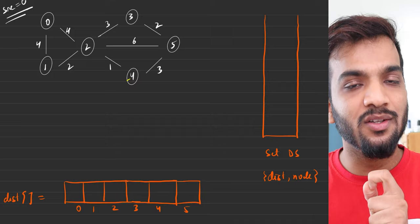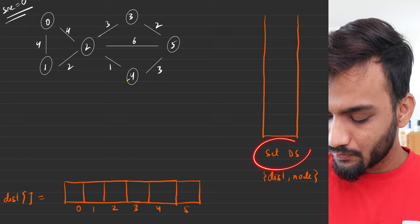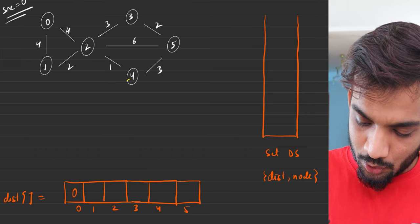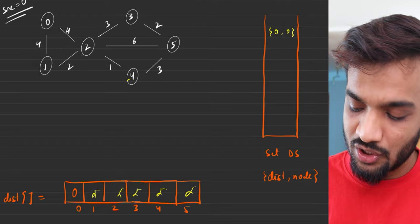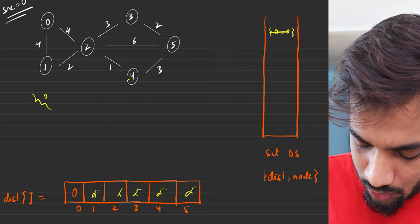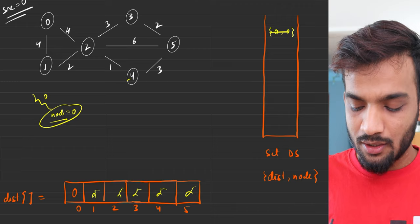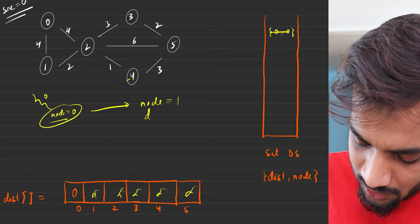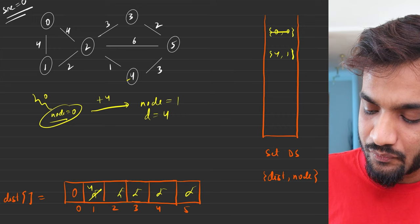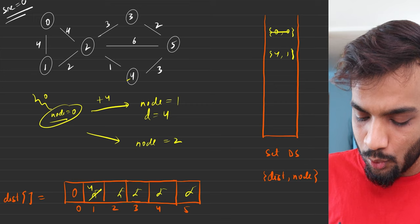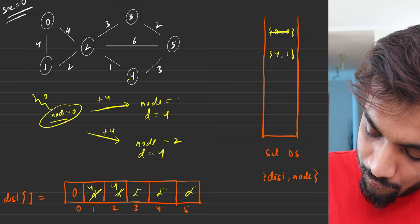We'll use the same setup: a distance array and a source node, initially zero for source and infinity for everything else. We put distance zero and source node zero into the set. From node zero we move to adjacent nodes — reaching node one at distance four, and node two also at distance four, so {4,1} and {4,2} go into the set.